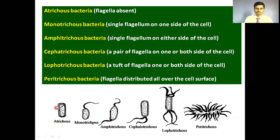If flagella are absent on the bacterial cell surface, they are termed atrichous bacteria. If flagella are present at one end, they are termed monotrichous. If flagella are at both ends, they are termed amphitrichous. A pair of flagella on one or both sides is termed cephalotrichous. A tuft or bunch of flagella on one or both sides is termed lophotrichous. Lastly, peritrichous bacteria have the whole surface covered with flagella.